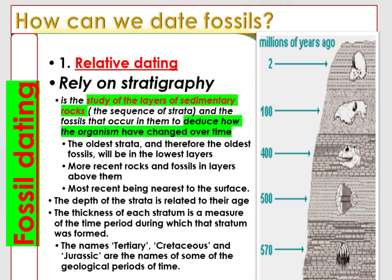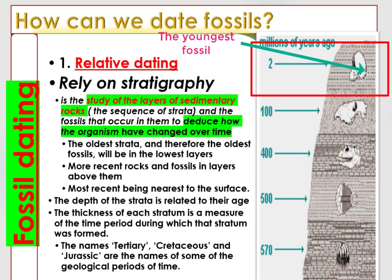Fossil dating: how do we know how old a fossil is? There are two main methods of determining a fossil's age — relative dating and absolute dating. Relative dating is used to determine a fossil's approximate age by comparing it to similar rocks and fossils of known ages. Relative dating relies on stratigraphy — the study of the layers of sedimentary rocks and the fossils within them to deduce how organisms have changed over time. The oldest strata, and therefore the oldest fossils, will be in the lowest layers of sedimentary rocks, while more recent rocks and fossils exist in layers above.